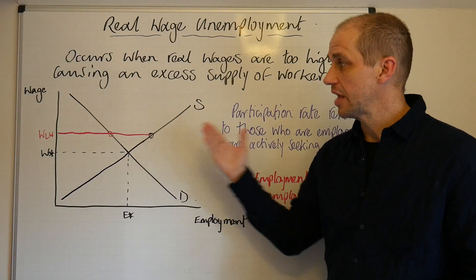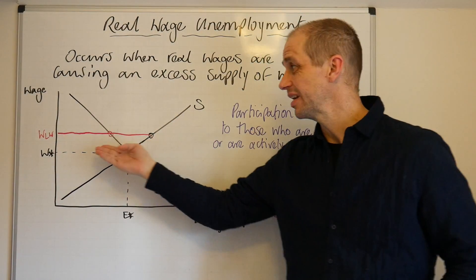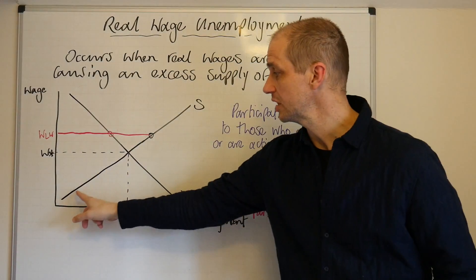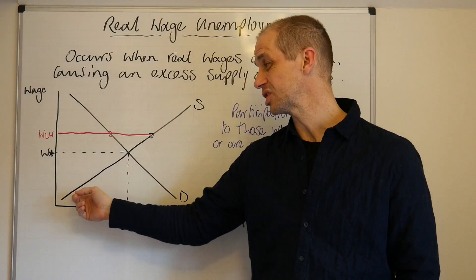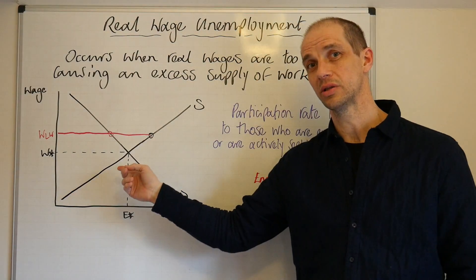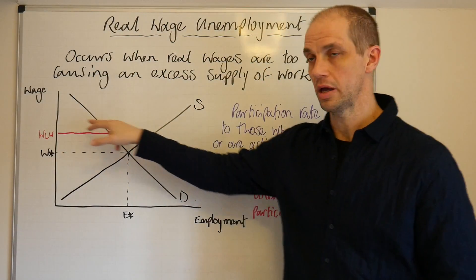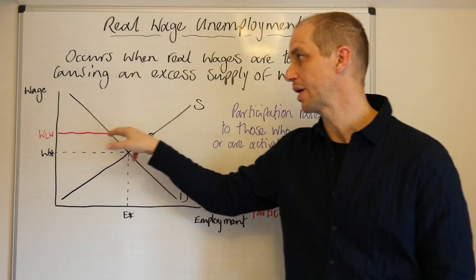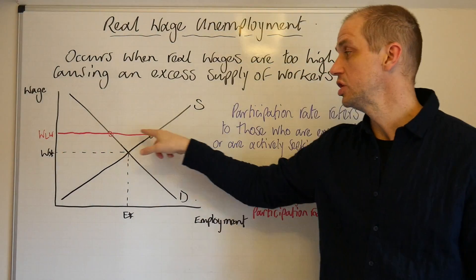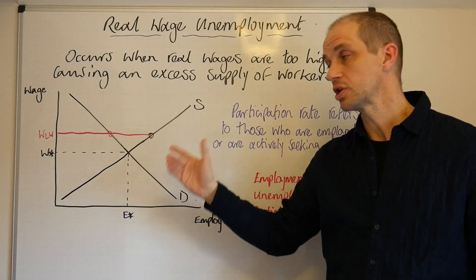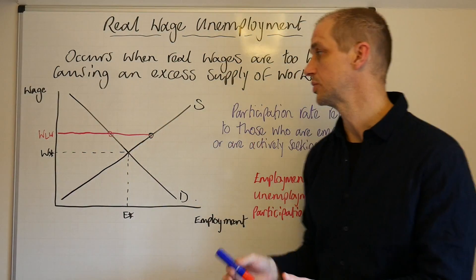What this does in effect is cause the supply curve to kink. The lower portion is now irrelevant because businesses can no longer hire workers at those low rates — they have to hire at WLW. The new supply curve also reflects the actual marginal cost of employing each of those additional workers.